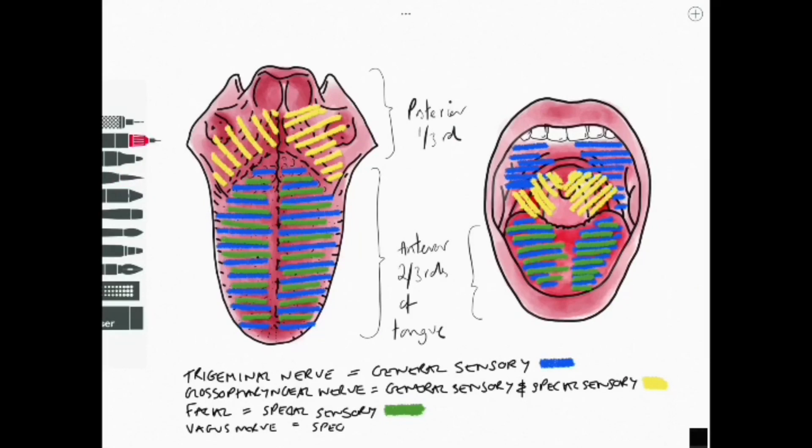Before we finish we must remember a small portion of the root of the tongue which has innervation by the vagus nerve and this is special sensory.